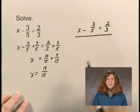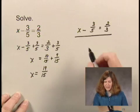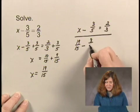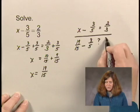We substitute 19 fifteenths for x. So, we have 19 fifteenths minus 3 fifths, and we want to know if that equals 2 thirds.